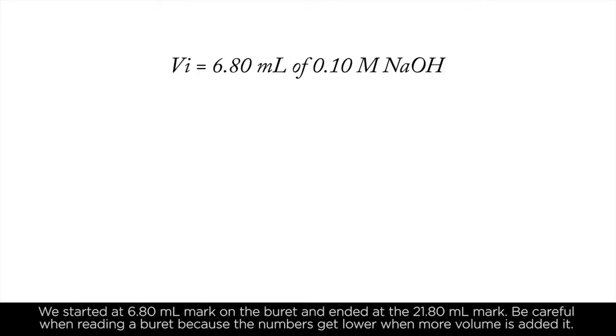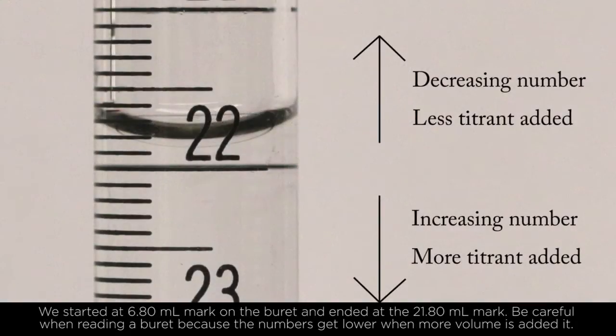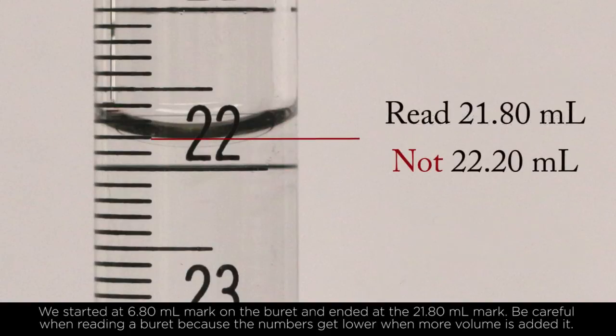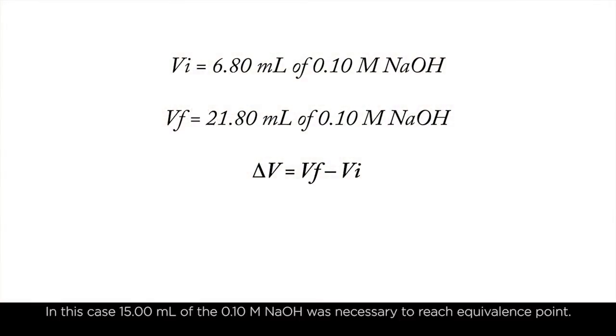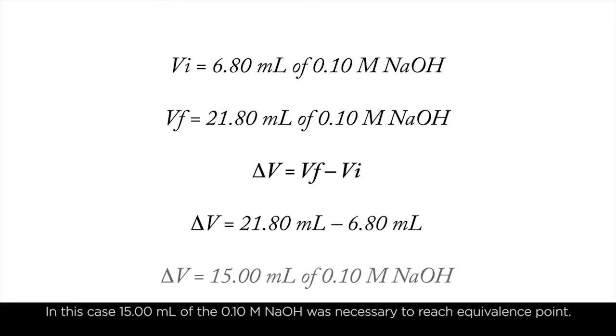We started at the 6.8 milliliter mark on the burette and ended at the 21.8 milliliter mark. Be careful when reading a burette because the numbers get lower when more volume is added. In this case, 15 milliliters of the 0.1 molar NaOH was necessary to reach equivalence point.